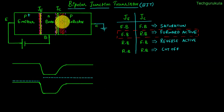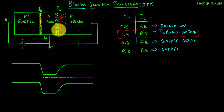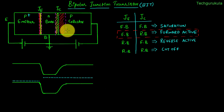Now let us reverse bias the collector junction by applying lower potential to the P-type collector compared to the N-type base. When we reverse bias the collector junction, the electric field in the depletion region would increase, the potential would also increase, and as a result the depletion width would increase.